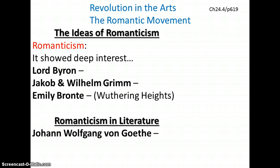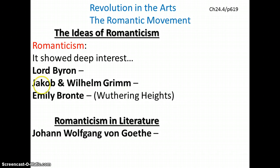Romanticism in literature: Johann Wolfgang von Goethe wrote The Sorrows of Young Werther — W-E-R-T-H-E-R. In it, he talked about love and struggle with Young Werther. It's an entertaining story because you want to know what happens to the main character next.